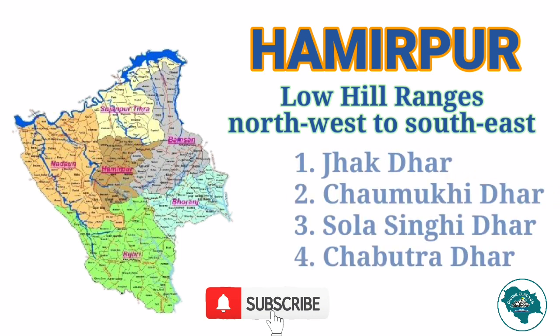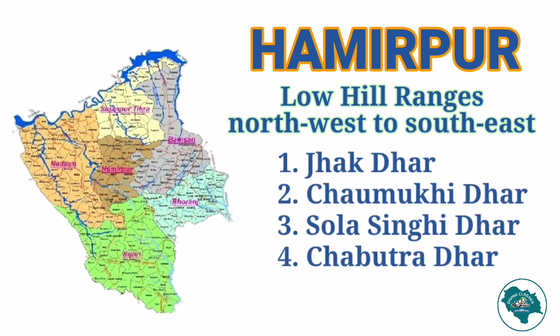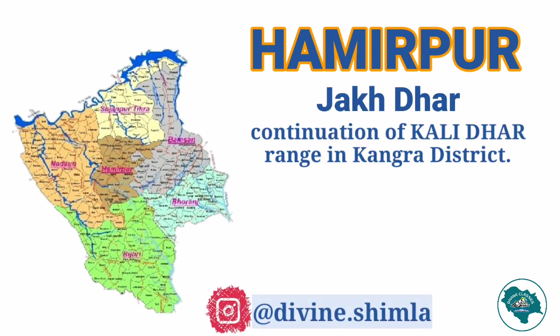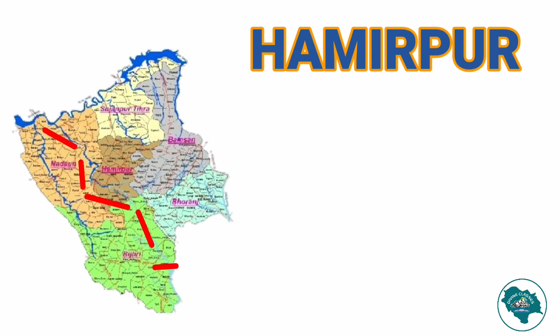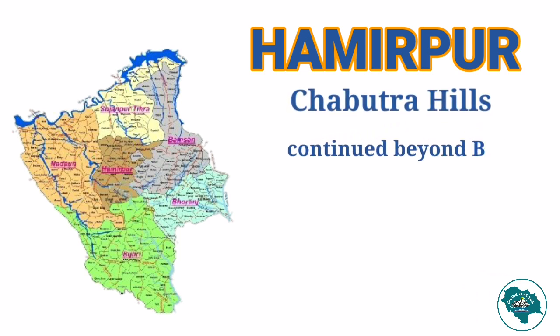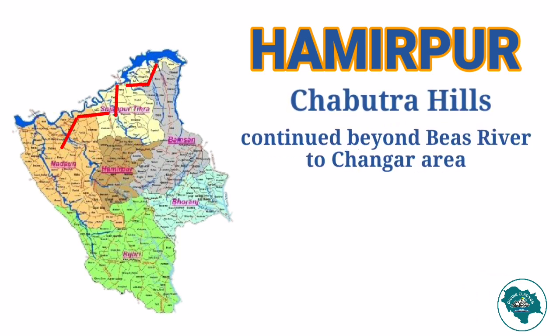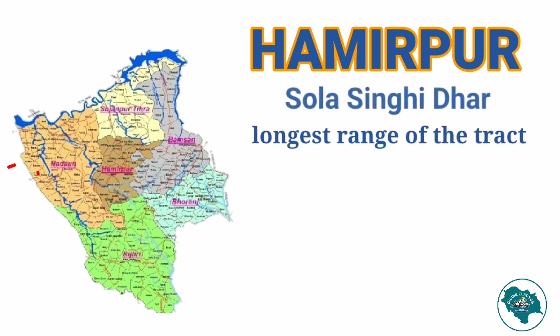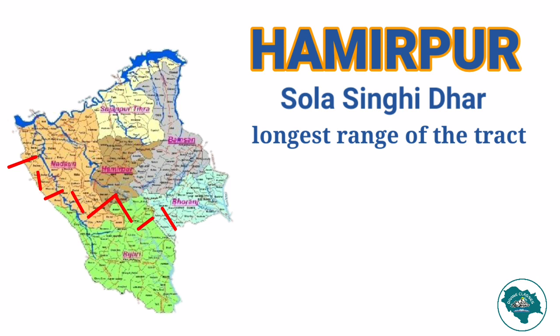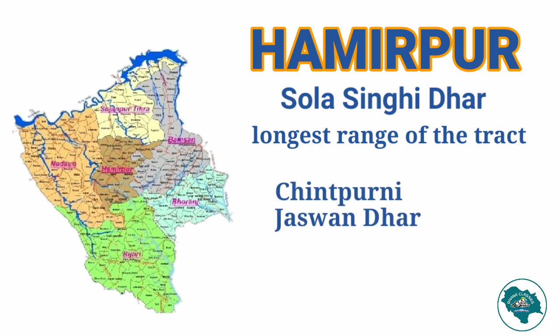Major dharas include Jajiar Jakhtar, Chaumukhi dhar, Sola Singhi dhar, and Chabutra dhar. The Jakhtar runs in continuation of the Kalidhar range in Kangra district. It enters Hamirpur near Nadon and goes in a south-eastern direction. The Chabutra hills continue beyond the Beas river to the Changar area, which is a bunch of broken and rugged low hills. Sola Singhi dhar is the longest range of the tract.